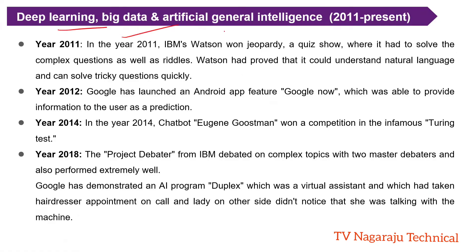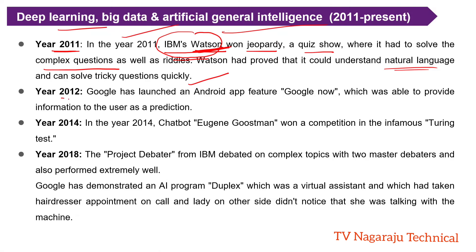Deep learning and big data became always important for developing different applications. In the year 2011, IBM's Watson won a quiz show called Jeopardy, where it solved complex questions. Watson could understand natural language questions — if you speak in a general language, it can take that and solve tricky questions very easily.